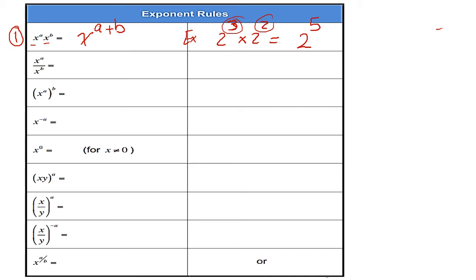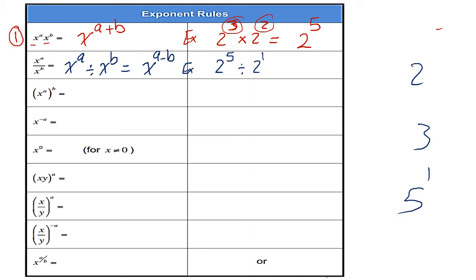Second rule: X to the power of a divided by X to the power of b. In the case of division with the same base, I keep the base and subtract the exponents. For example, 2 to the power of 5 divided by 2 — and 2 here means 2 to the power of 1, because any number without a written power has an implied power of 1 — so the answer is 2 to the power of 4, after subtracting 5 minus 1.